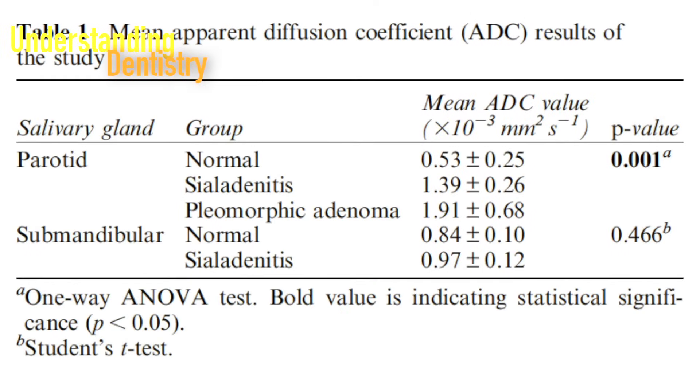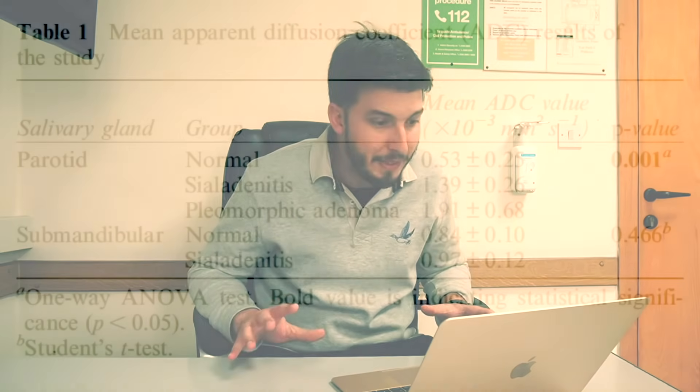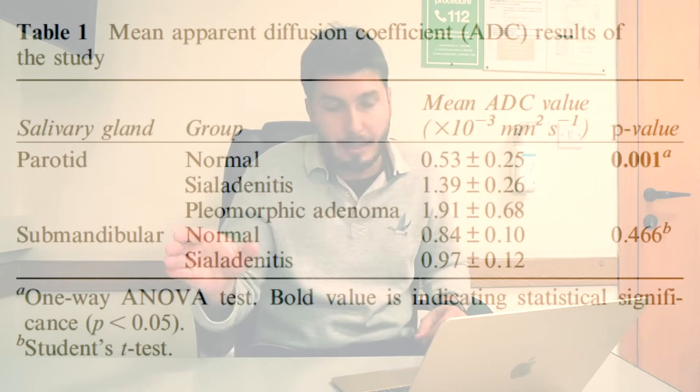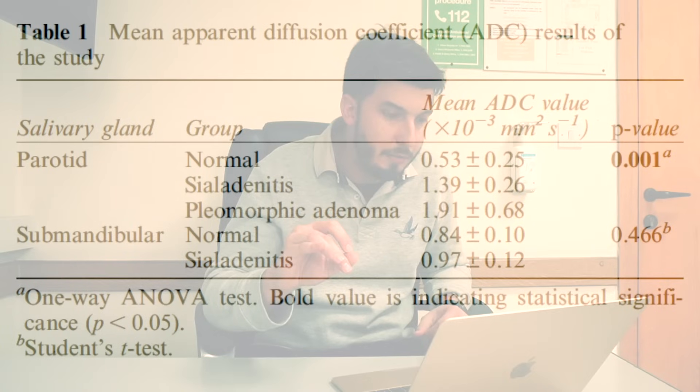Table 1 shows the group comparisons. For the parotid gland, we have three groups: normal parotid glands, glands with sialadenitis, and glands with pleomorphic adenoma. We are measuring the diffusion coefficient (ADC value) from the MRI examination. The p-value was absolutely significant, indicating that the ADC value could differentiate the conditions across those groups.